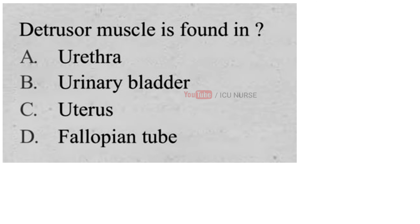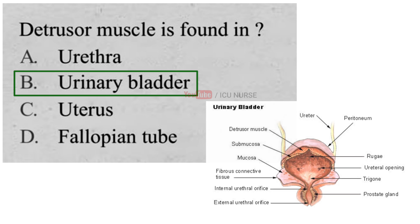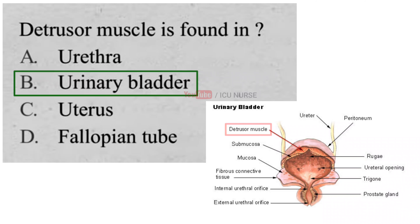Detrusor muscle is found in: A. Urethra, B. Urinary Bladder, C. Uterus, D. Fallopian Tube. And the correct answer is B. Urinary Bladder. The detrusor muscle is located within the walls of the bladder and is composed of smooth muscle fibers that are longitudinal and circular. The primary function of the detrusor muscle is to contract during urination to push urine out of the bladder and into the urethra. The detrusor muscle will relax to allow the storage of urine in the urinary bladder.